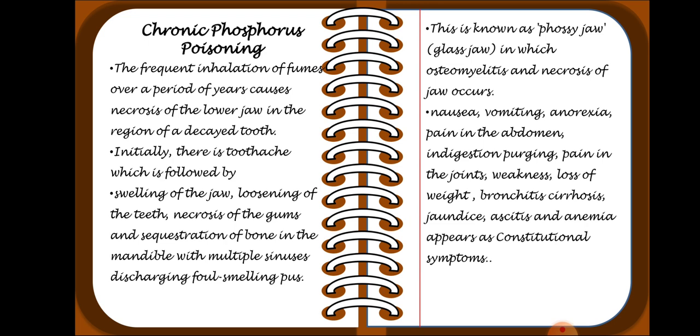Constitutional symptoms of chronic phosphorus poisoning include nausea, vomiting, anorexia, pain in the abdomen, indigestion, purging, pain in the joints, weakness, loss of weight, bronchitis, cirrhosis, jaundice, ascites, and anemia. Treatment is the same as for acute poisoning, but symptomatic treatment should also be given.